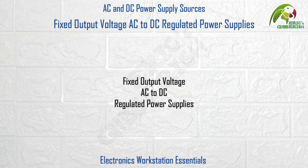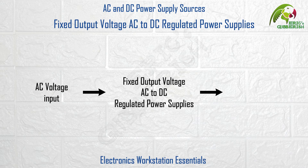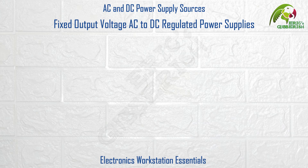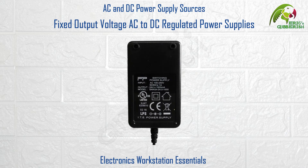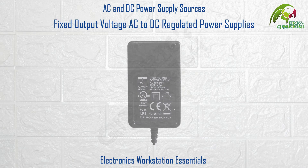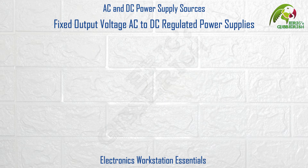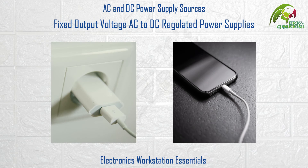Fixed output voltage AC to DC regulated power supplies. These types of DC power supply sources convert an AC voltage input into a fixed and regulated DC voltage output. Examples of which would be an AC to 24V DC power supply like this one, or an AC to 12V DC power supply similar to this. In fact the mobile charger that you use on a daily basis is also an example of such a DC power supply.